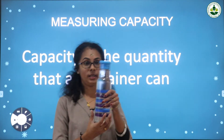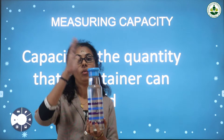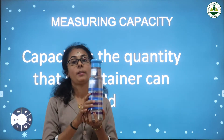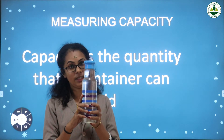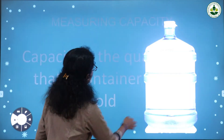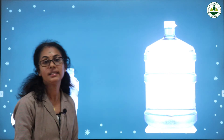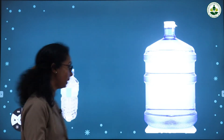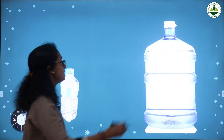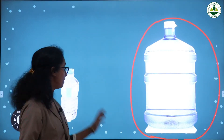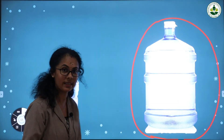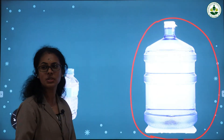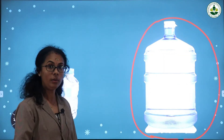Just listen — this is a 1 litre bottle; it contains only 1 litre of water. So what is the capacity of this bottle? 1 litre. Now compare these two bottles. Which bottle contains more water? The second bottle contains more water. So which bottle has more capacity — the first one or the second one? The second bottle has more capacity.